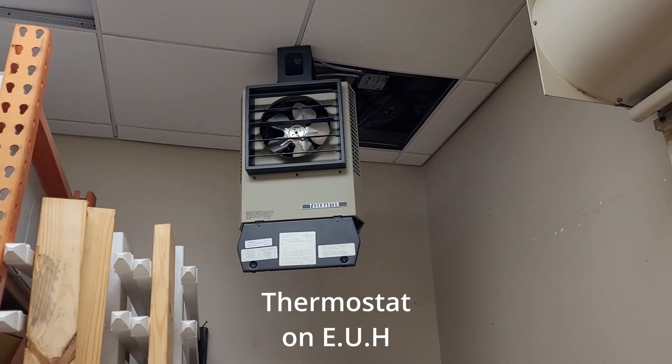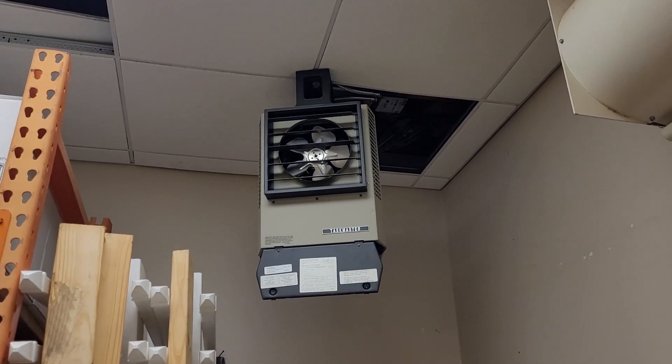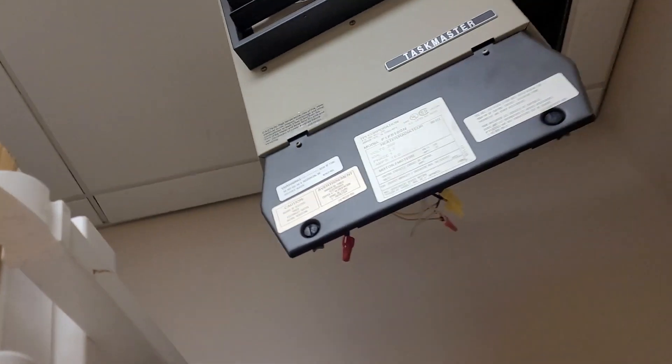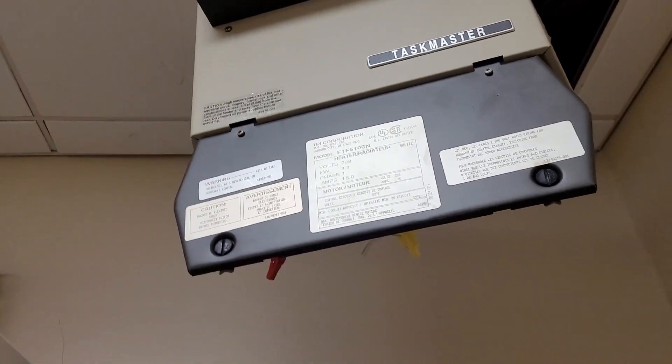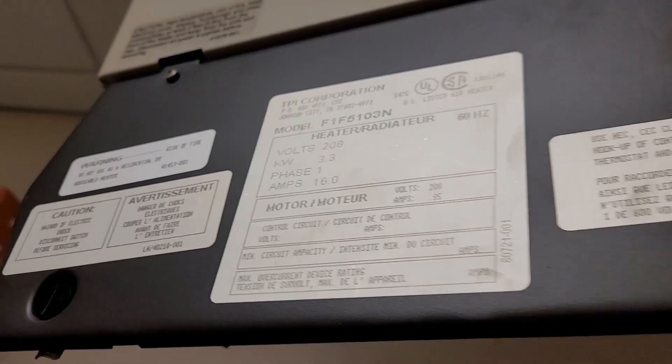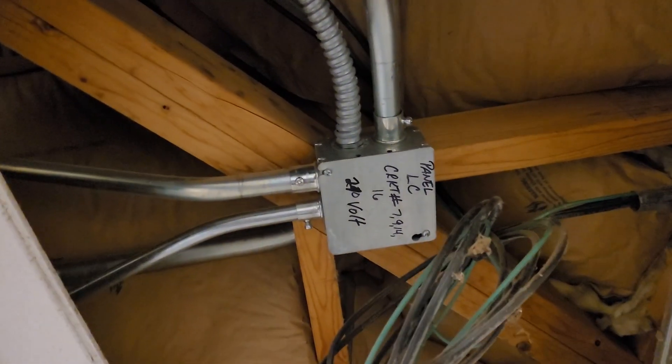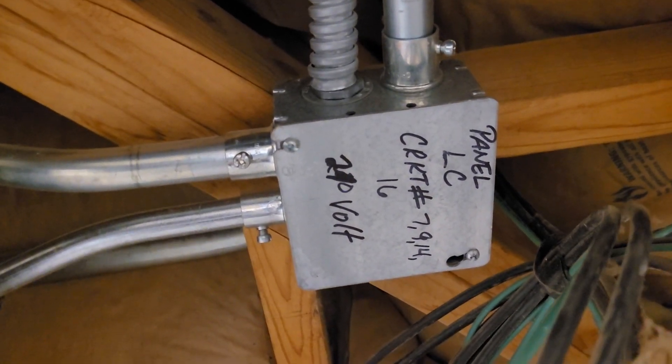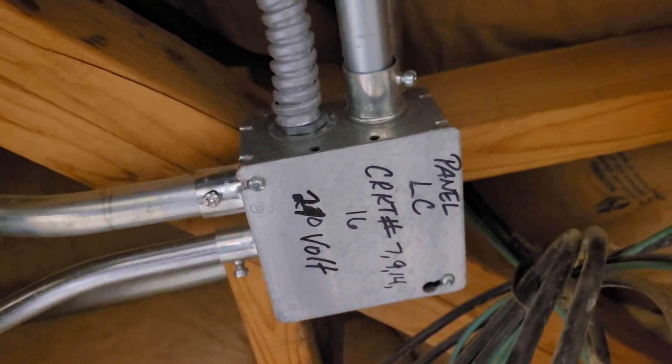Okay, so the customer wants this electric unit heater on a thermostat, Wi-Fi enabled thermostat. This is a 208 volt heater, about 3.3 kW. I got to looking around and I found the breaker panel. The breaker panel is labeled panel LC and it tells you which circuit it is.